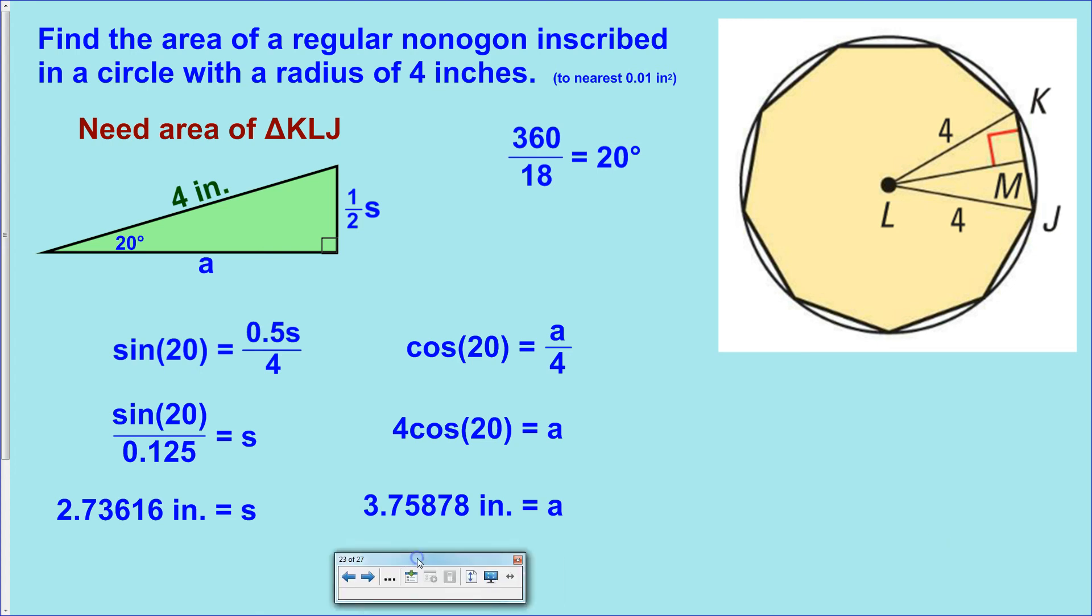And from there, we have the two lengths that we need to know. So, we need to start working on the area of the larger triangle now. We have s. Not just half s, but we have the length of the entire side right here. And we have the length of the apothem. So, we're going to take nine times the area of triangle KLJ. So, nine times base times height divided by two.